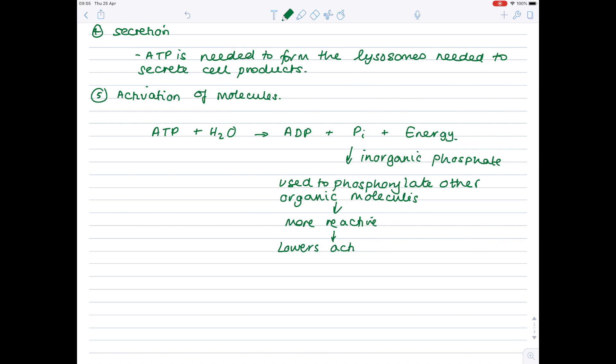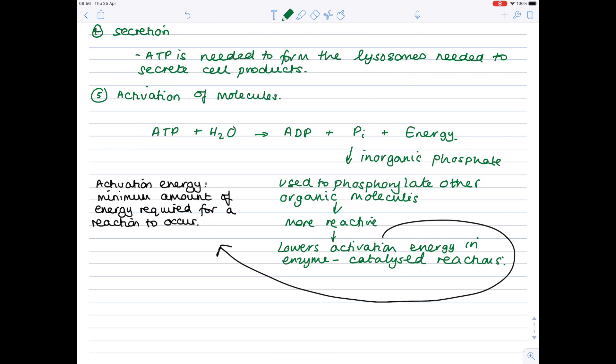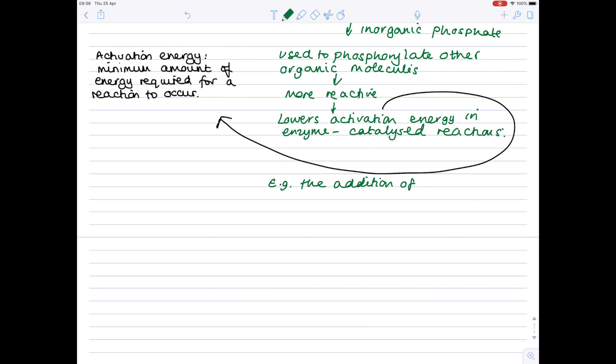And remember, activation energy is the minimum amount of energy required for a reaction to occur. So if you lower it, this is a good thing. Let's name a specific example of this, and that could be the addition of phosphate to glucose molecules at the start of glycolysis.